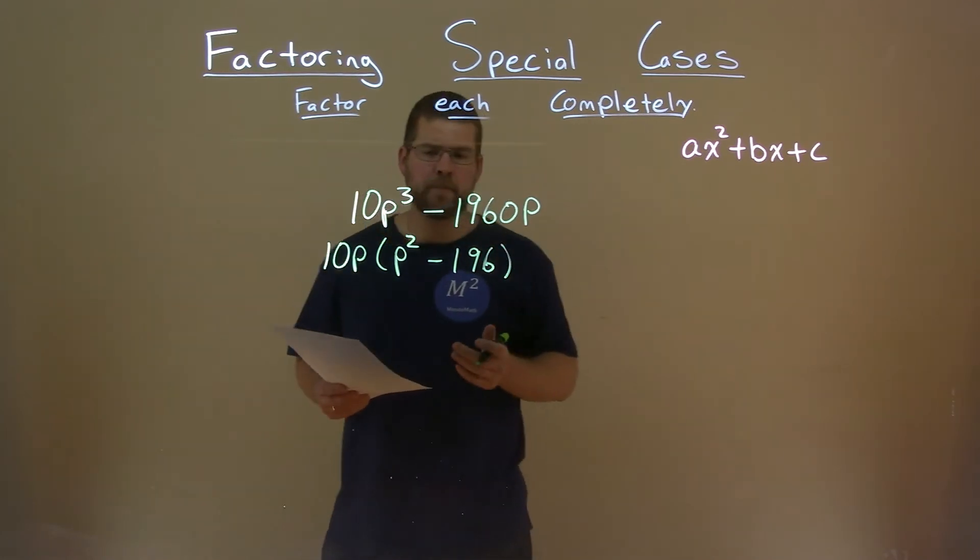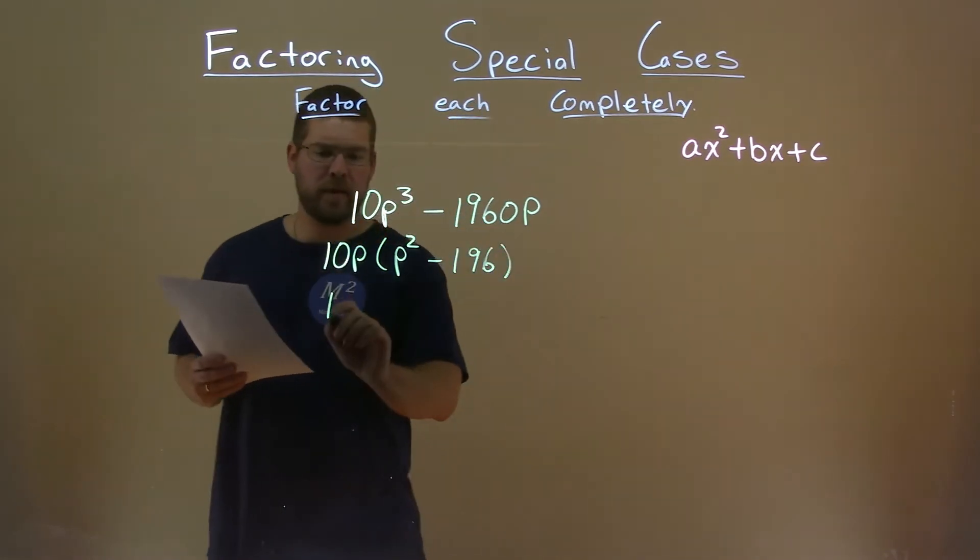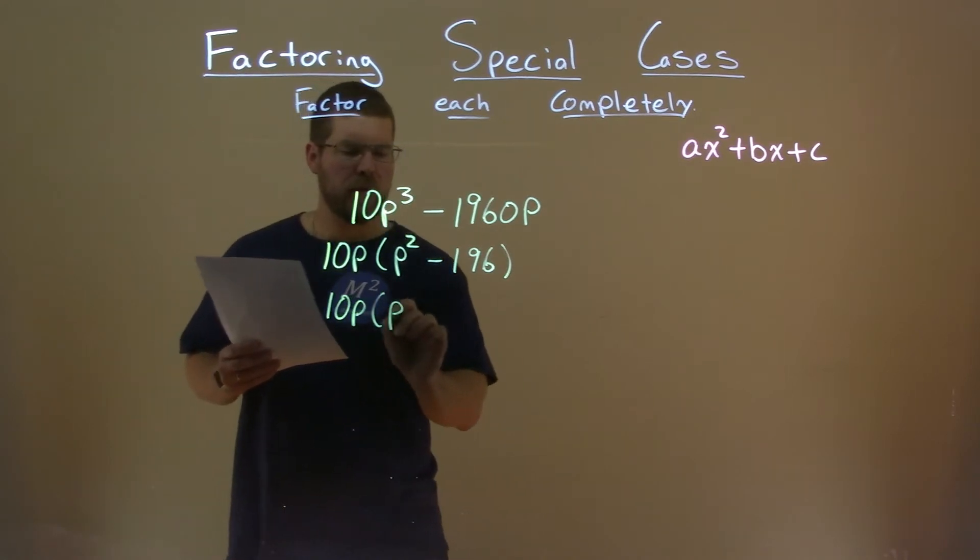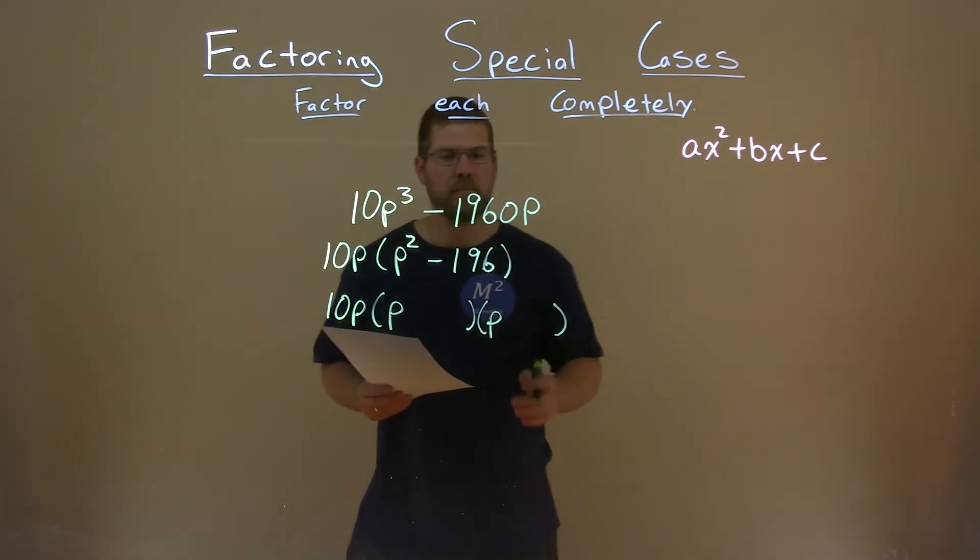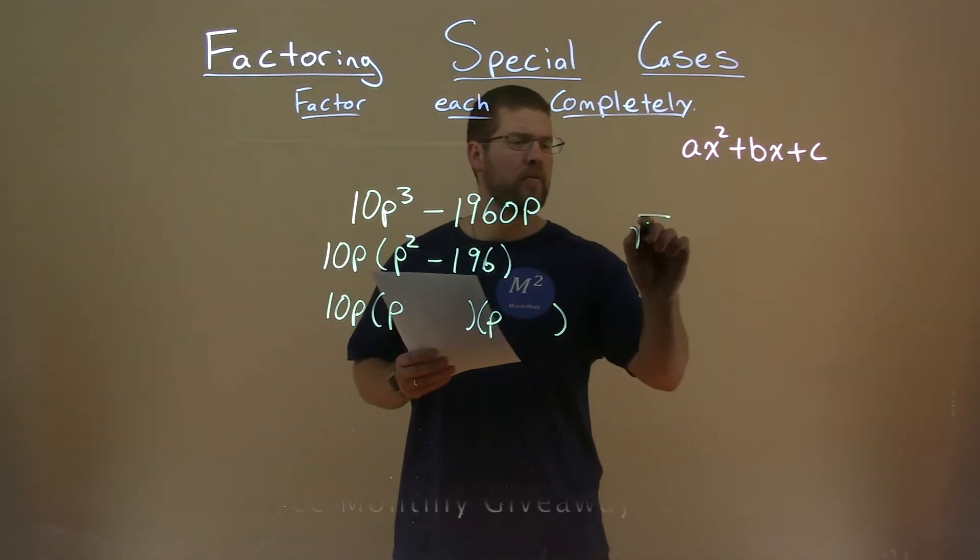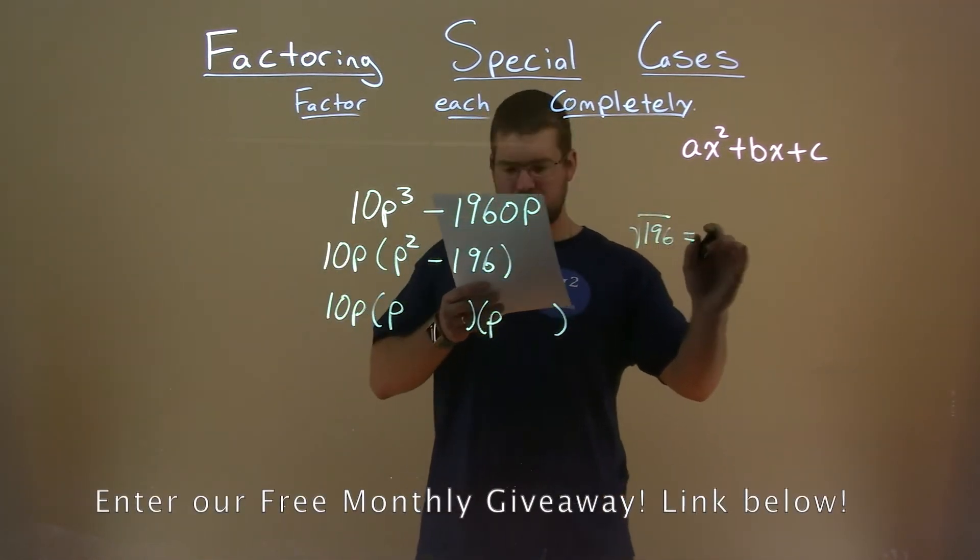What do we know from here? Well, p squared I know is a perfect square, so 10p, and I won't write it like this. I have p times p is that p squared, but what about 196? Well, square root of 196 is equal to 14.